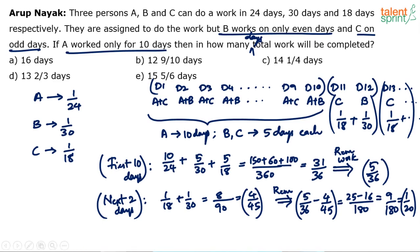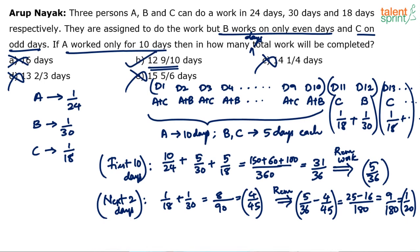Looking at the options: A) 16 days — ruled out; B) 12 and 9/10 days — possible; C) 14 days — ruled out; D) 13 days — ruled out; E) 15 days — ruled out. Since the work finishes on day 13 but before it ends, the answer must be between 12 and 13. Only option B fits, so we can mark B as the answer.